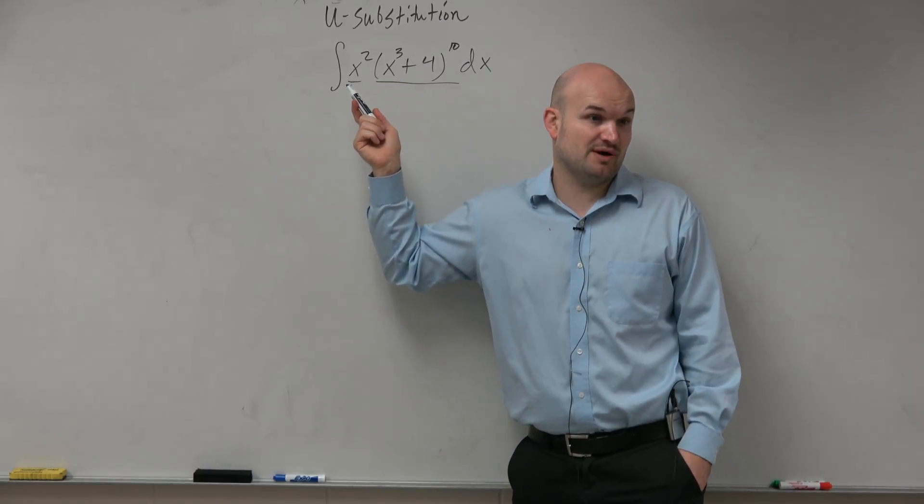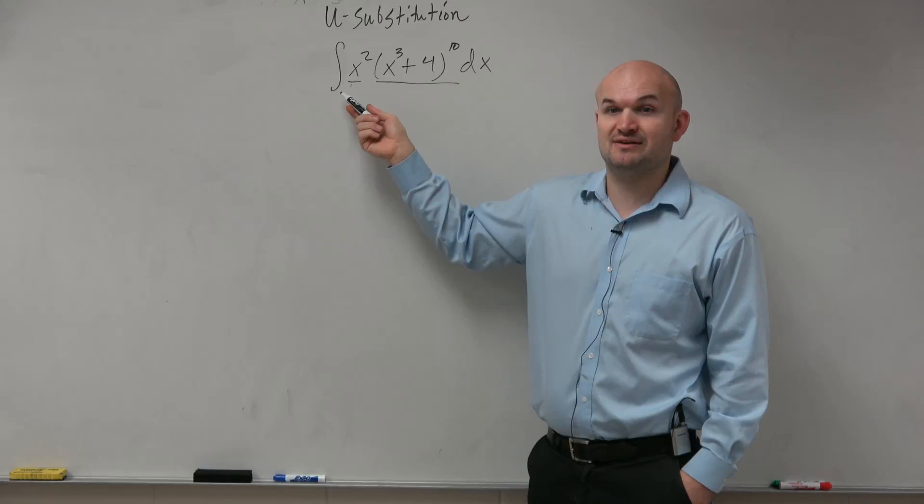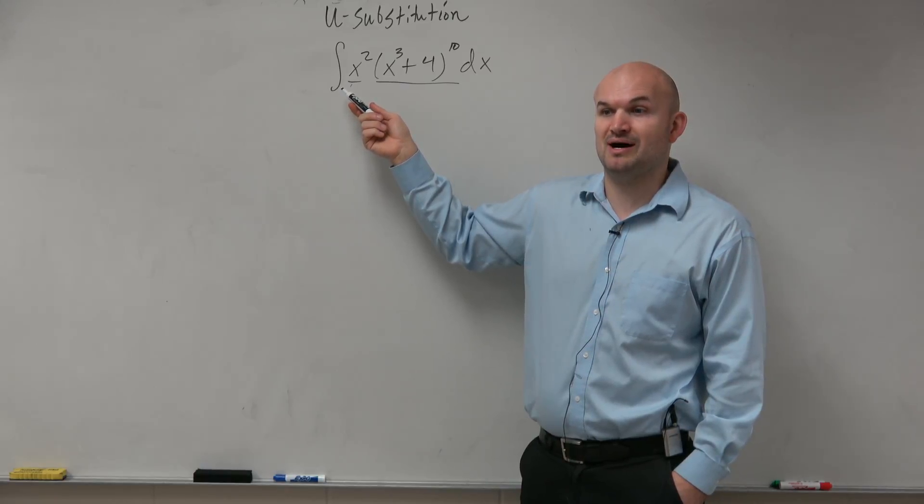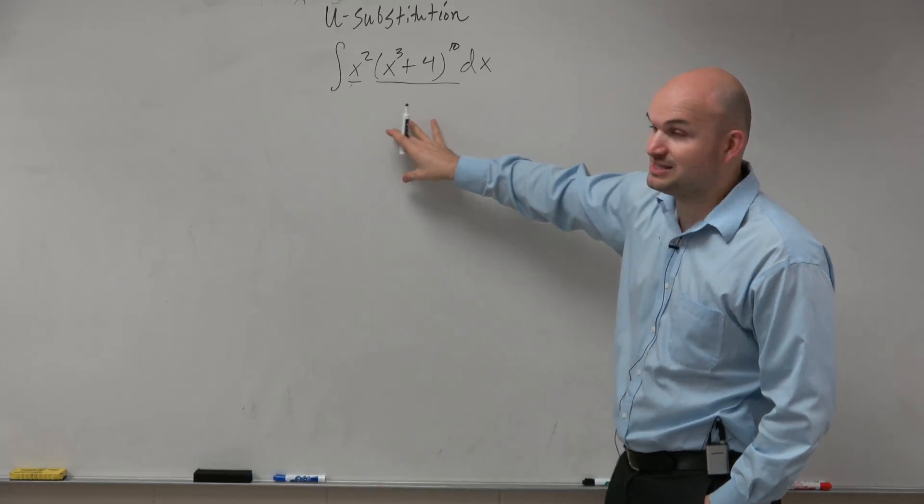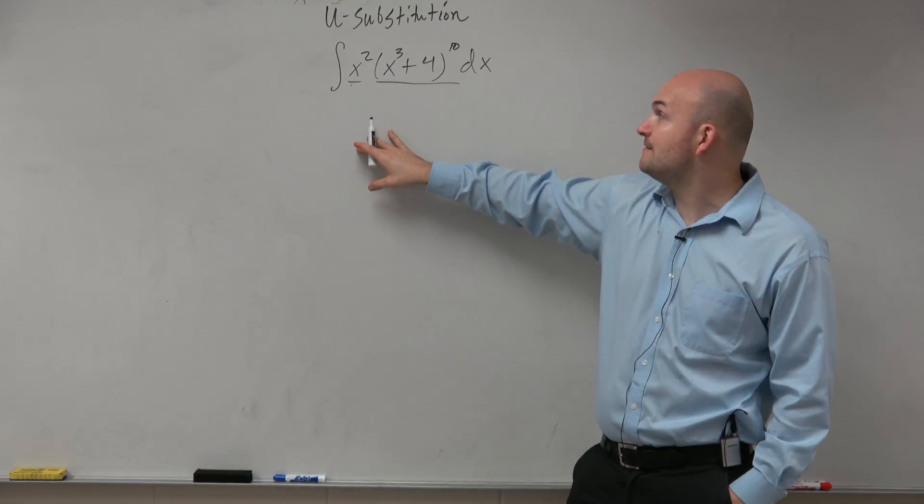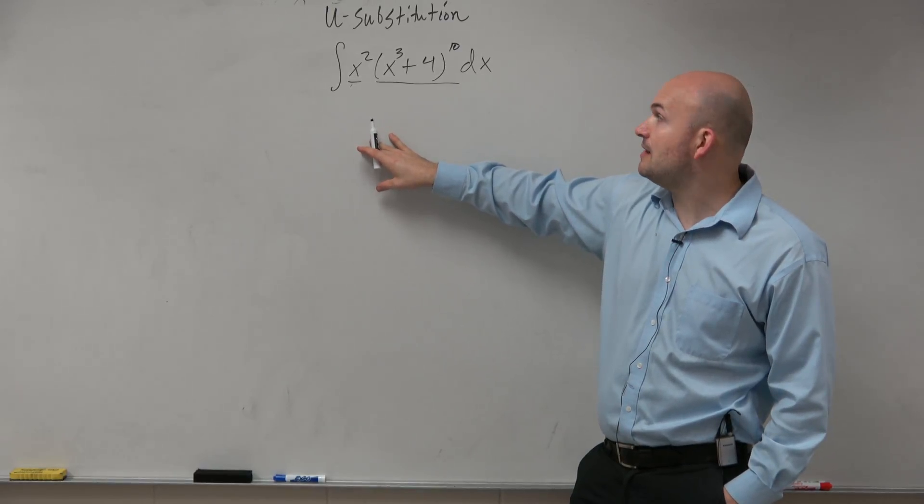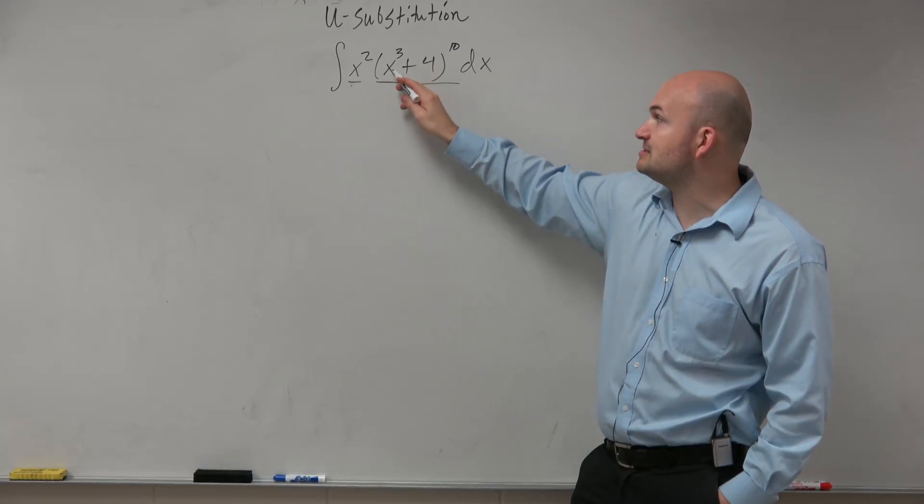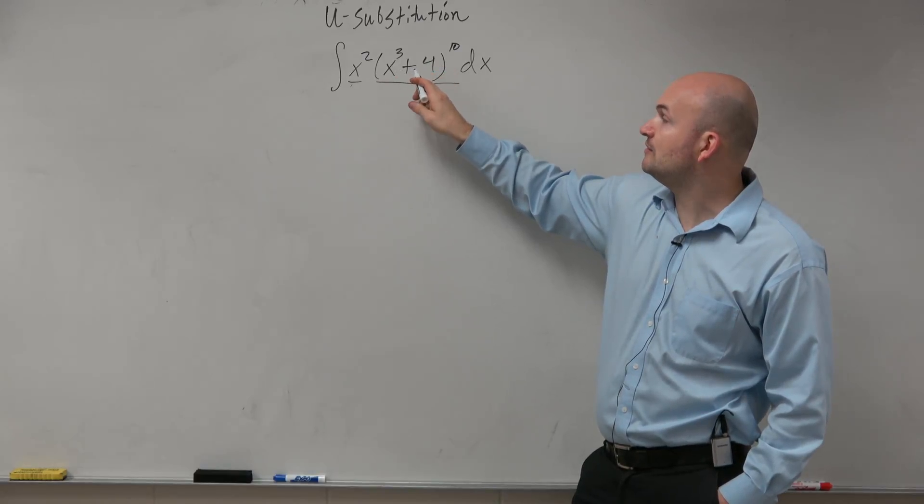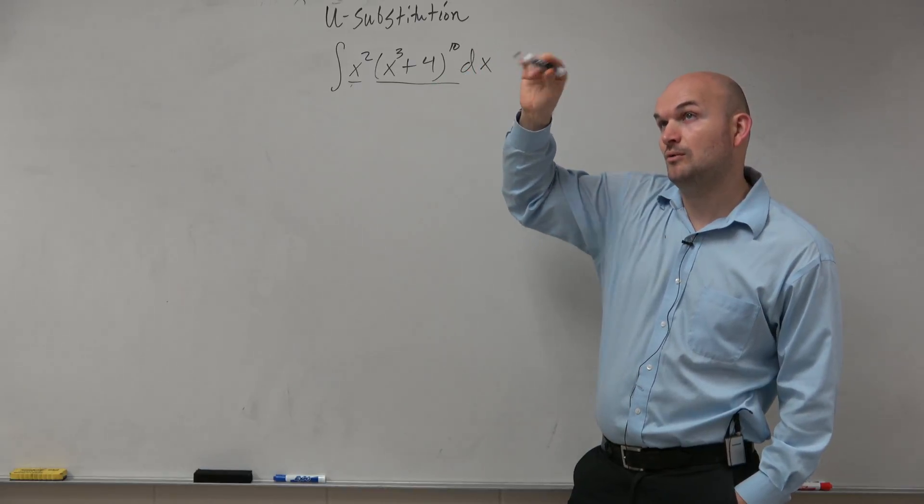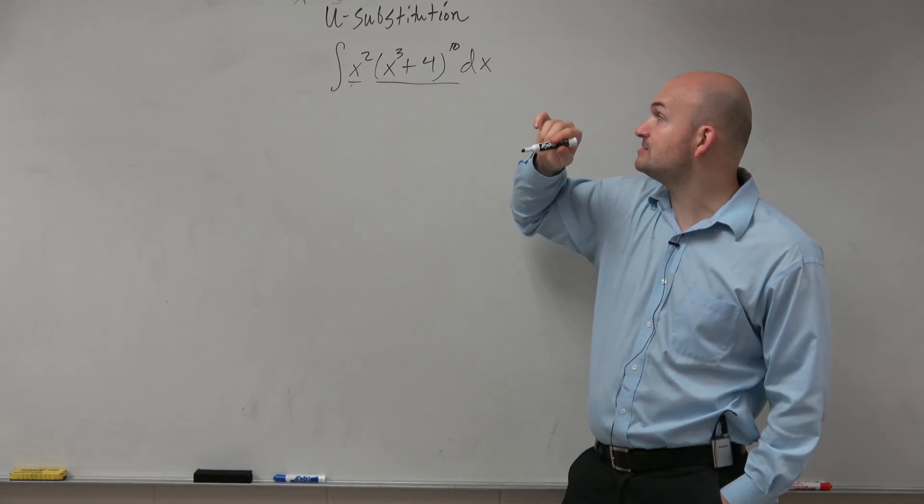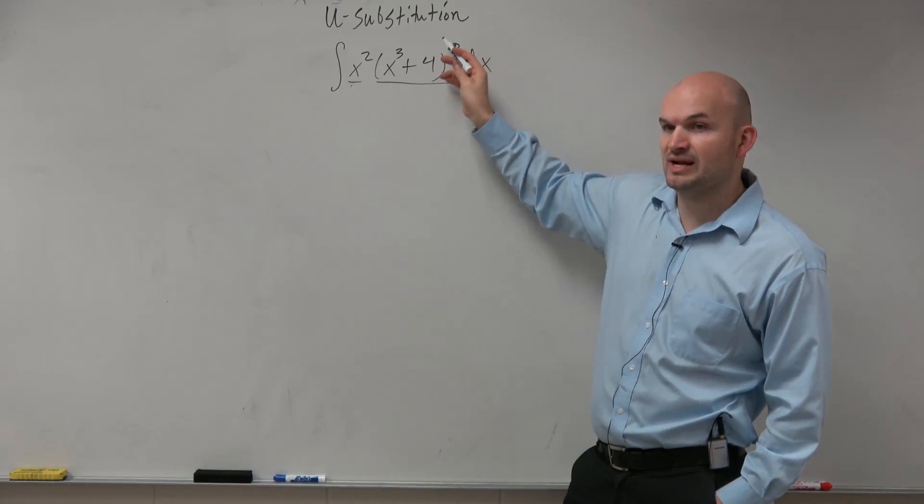Because what is the derivative of this? This is 3x squared, but I only have an x squared. So that means I would just need to multiply by 1 third, right? So I could basically do this in my head. I'd be multiplying by 1 third, and then I'd just have to take 1 third times the anti-derivative of u to the 10th power, which would be u to the 11th. So therefore, it would be 1 third times 1 over 11 times this raised to the 11th power.